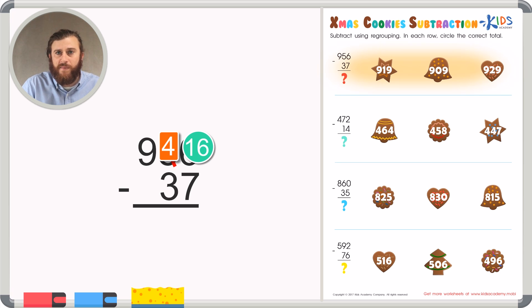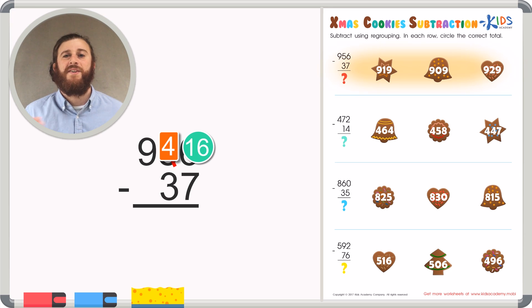16 minus 7 is a problem in which we'll probably have to use our fingers. So let's count up from 7 to 16. 7, 8, 9, 10, 11, 12, 13, 14, 15, 16. 16 minus 7 is 9.